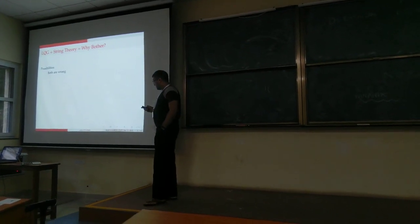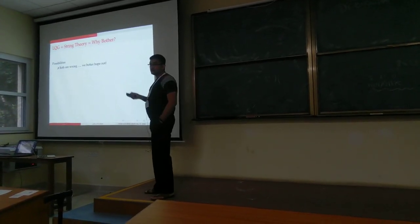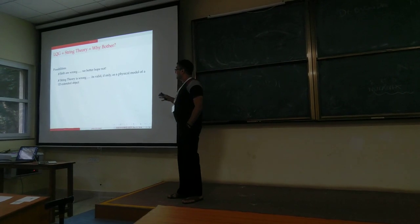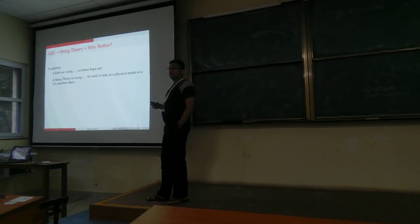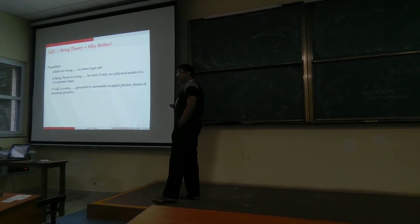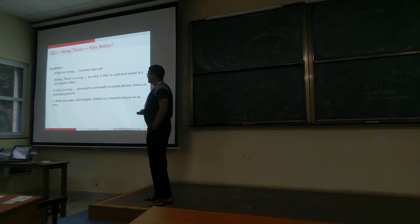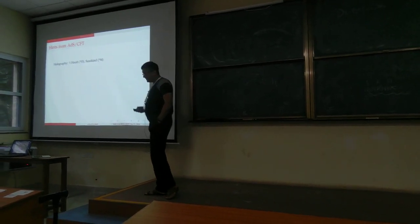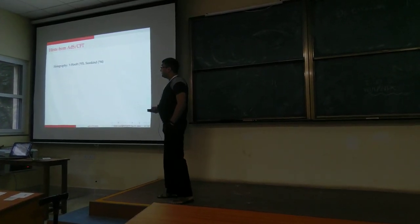If you start from the quantization of the ADM Hamiltonian and the Ashtekar variables, then you are following the laws of physics, the process of physics. So it is as much a theory of physics as string theory is. Now one might say that both of these are wrong and then quantum gravity doesn't really exist, but you know, well, you better hope not because that will be bad for many of us. Possibility is that string theory is wrong, but string theory is definitely valid even if at the very least it is a physical model of the 1D extended object, and such objects will exist in nature. So the other possibility is LQG is wrong, but again it is rooted in universally accepted physics. So both have valid insights - this is the possibility I think which is the most reasonable conclusion.